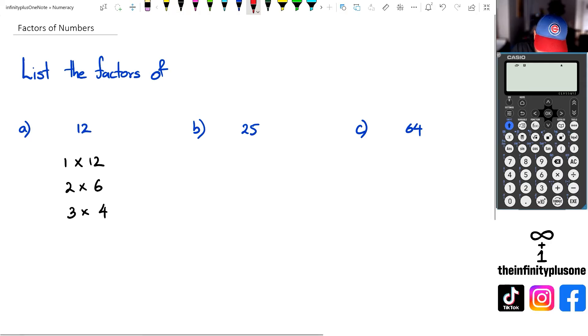But eventually what's going to happen is like these two numbers here, the two numbers that you multiply to get to 12, will get really close, and that's when you know you've found out all of them.